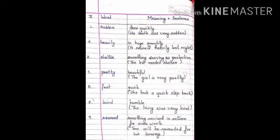The first word is sudden which means done quickly. The sentence is his death was very sudden. The second word is heavily which means in huge quantity that means in abundance. And the sentence is it rained heavily last night.